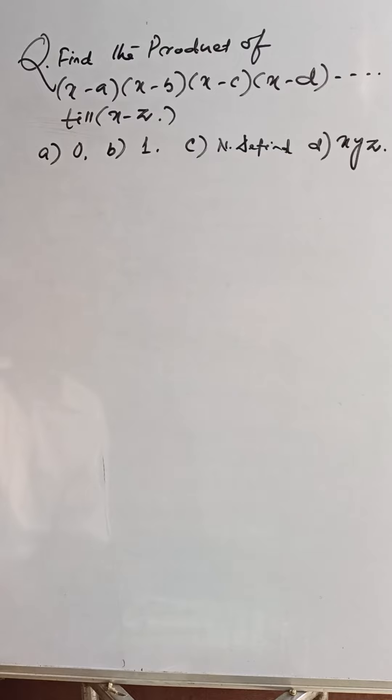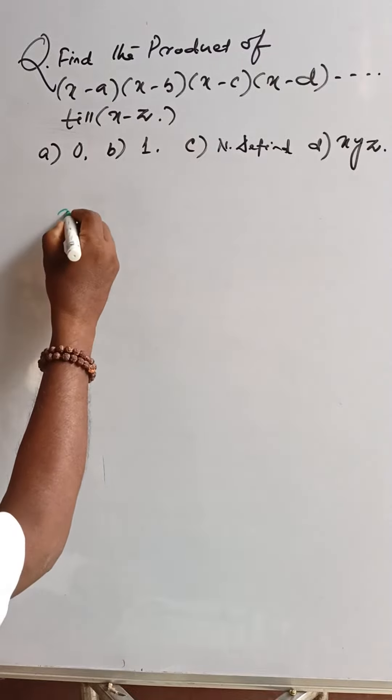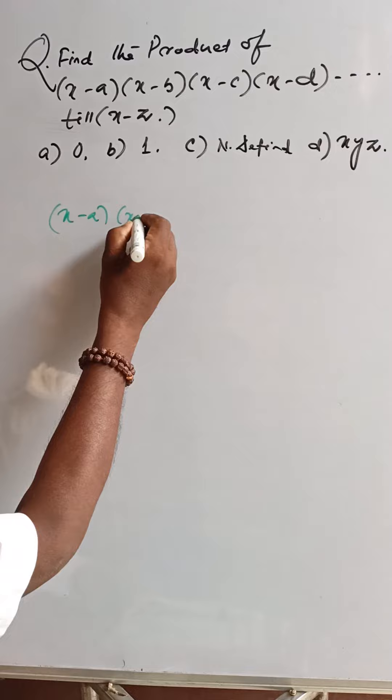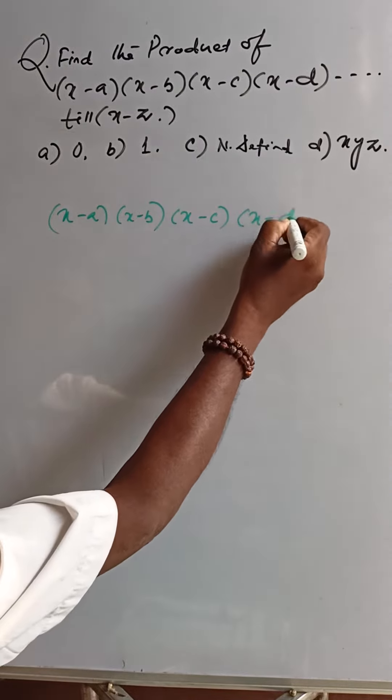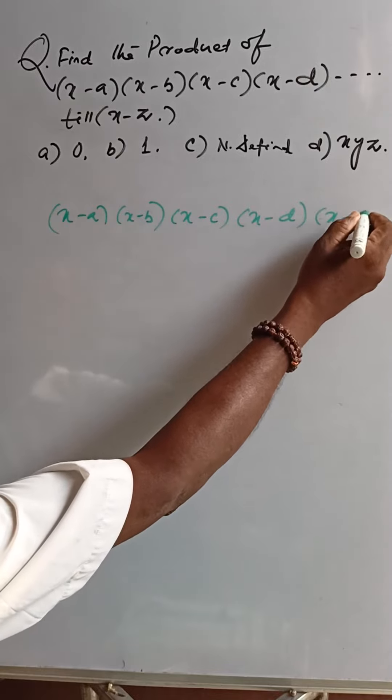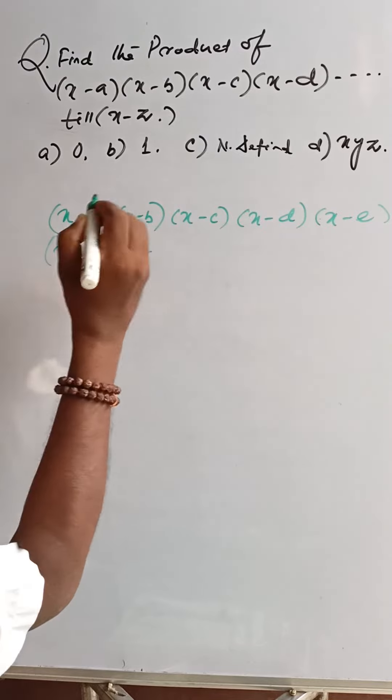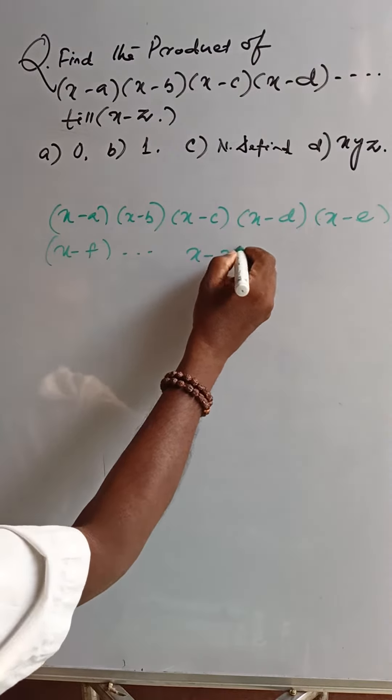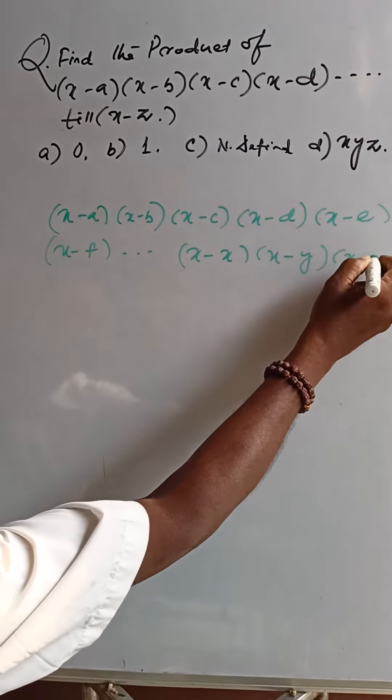If we are going for option 0, that is the answer because x minus a into x minus b into x minus c and x minus d, x minus e, x minus f till x minus x and x minus y and x minus z also we can get.